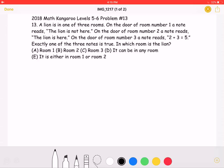This is the 2018 Math Kangaroo Levels 5-6 Problem Number 13. A lion is in one of three rooms. On the door of room number 1, a note reads, the lion is not here.